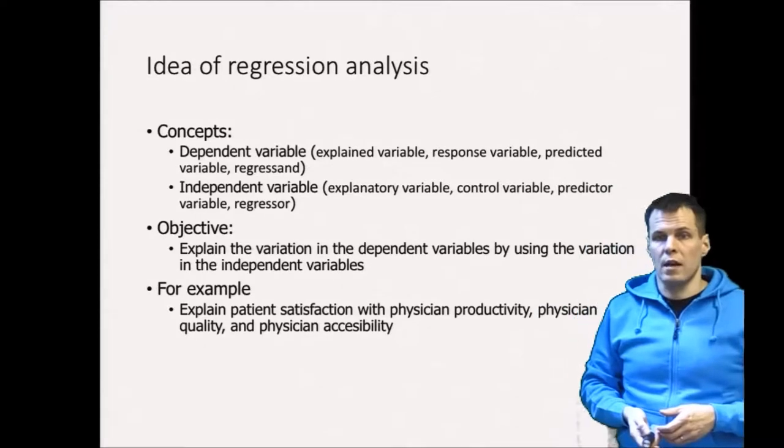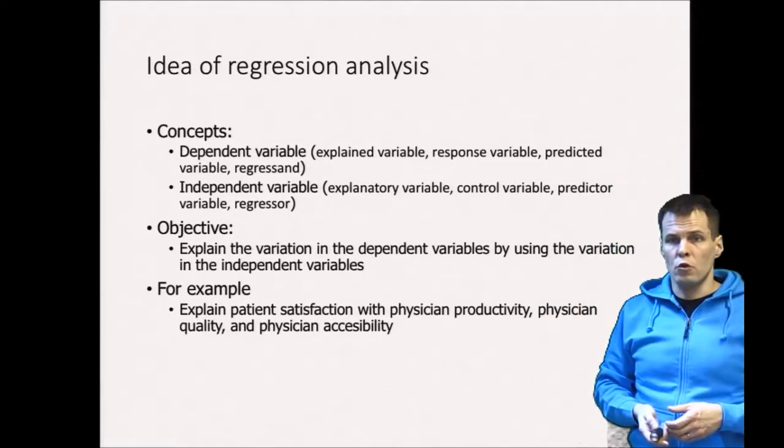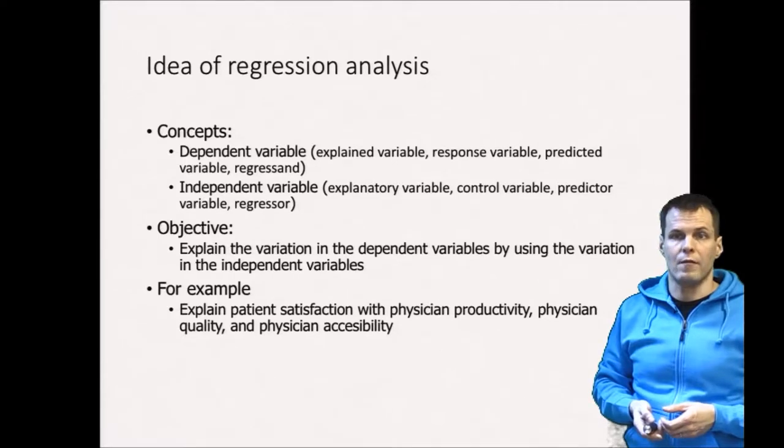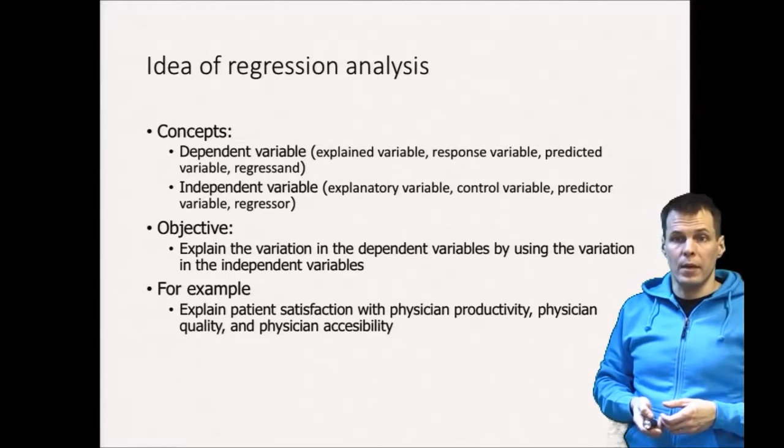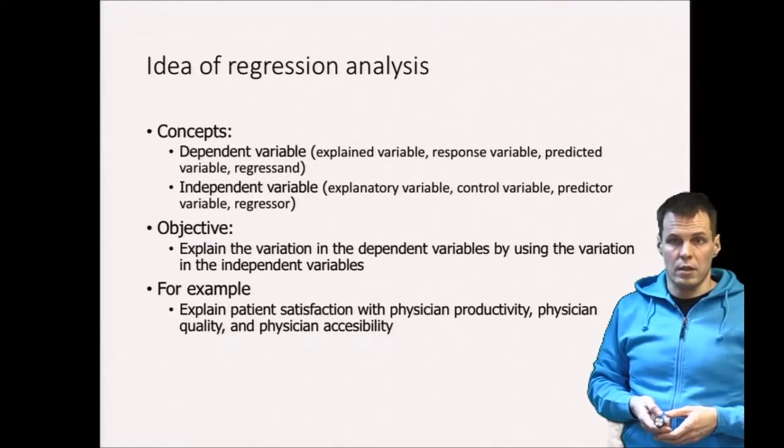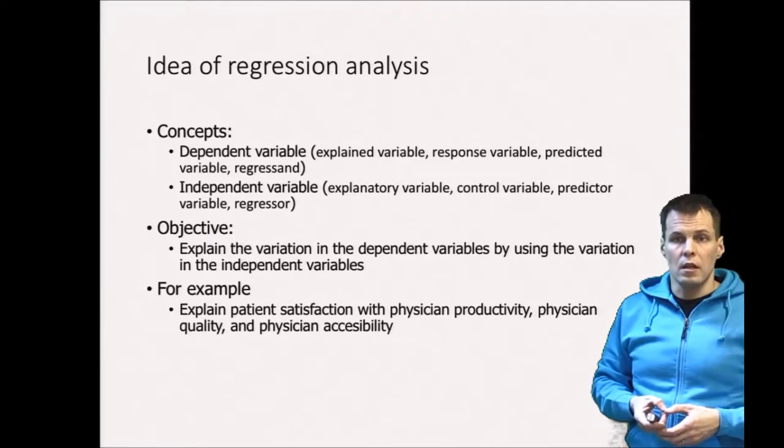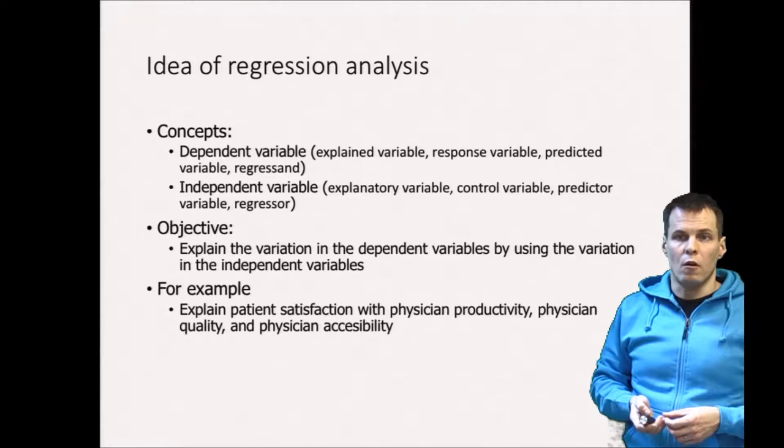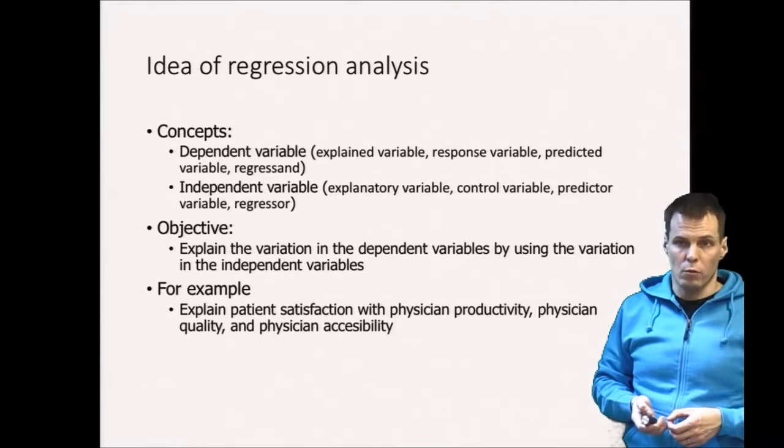In a regression analysis we have two kinds of variables. We have one dependent variable that we want to explain, for example company's profitability or ROA could be a dependent variable. Then we have multiple independent variables. The independent variables are variables that we use to explain the dependent variable. For example we could have CEO gender and company size and company industry. Then regression analysis answers the question: how much do these variables together explain the variation of the dependent variable and which ones of the variables are the most important ones for explaining that.